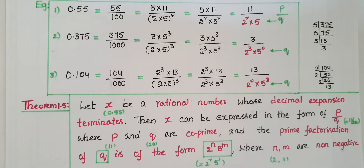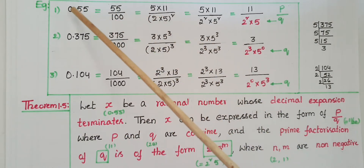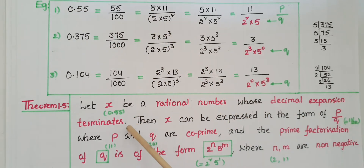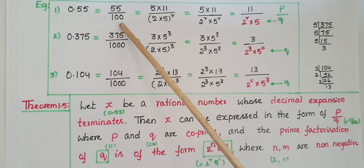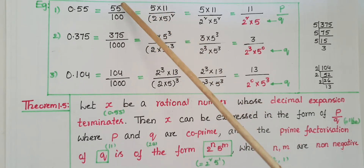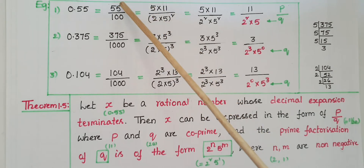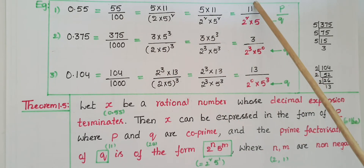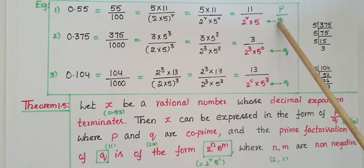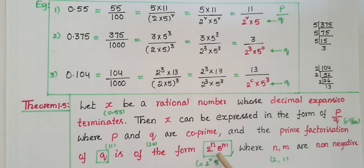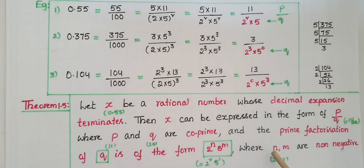Now we can say: let x be a rational number whose decimal expansion terminates. If we take 0.55, this is a rational number whose decimal expansion terminates. Then x can be expressed in the form p by q — that is 55 by 100 — where p and q are co-prime numbers. But 55 and 100 are not co-prime, so you have to cancel the common factors. Then you get the p by q form where p and q are co-prime, and the prime factorization of q is of the form 2 to the power of n into 5 to the power of m, where n and m are non-negative integers.